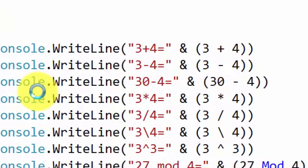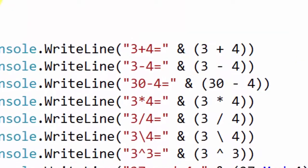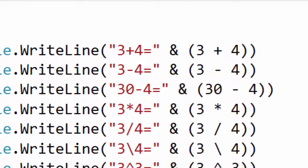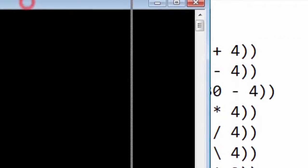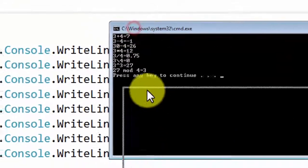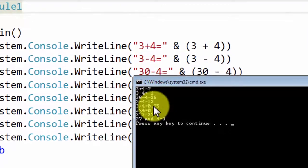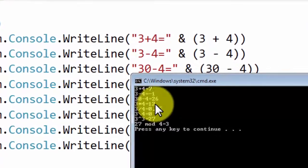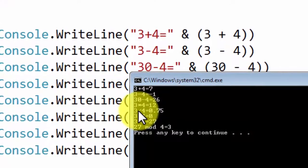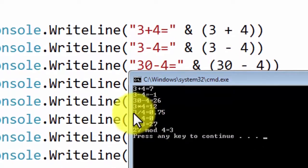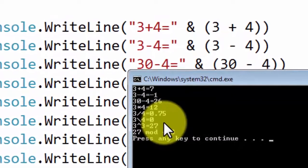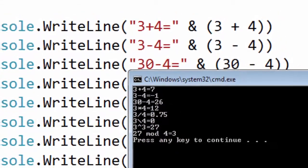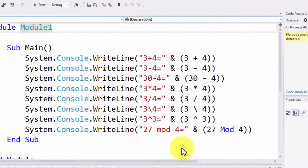Now let's run this. Let me hold the screen by doing Control F5, or I could do Debug, start without debugging, either of the two. And here you can see the outputs: 3 + 4 comes out to 7, 3 - 4 is -1, 30 - 4 is positive 26, 3 × 4 is 12, 3 / 4 equals 0.75, but 3 \ 4 equals 0 because it truncates the decimal. 3 ^ 3 is 27, and 27 mod 4 is 3. So that's where we basically tested these operations.